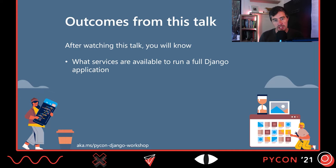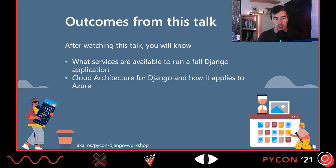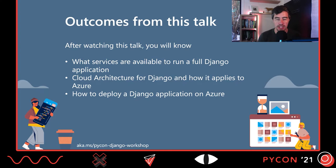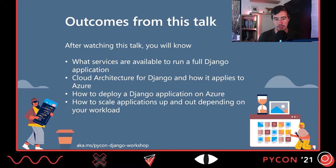In terms of outcomes, after watching this talk you'll know what services are available to run a full Django application. I'll recap Django architecture and connect it back into the Microsoft Azure stack to explain how the different components work together. We'll look at cloud architecture for Django and how a Django application can be deployed on the cloud so that it's scalable, and how to deploy it either through an IDE, using DevOps CI/CD, from a private or public Git server.